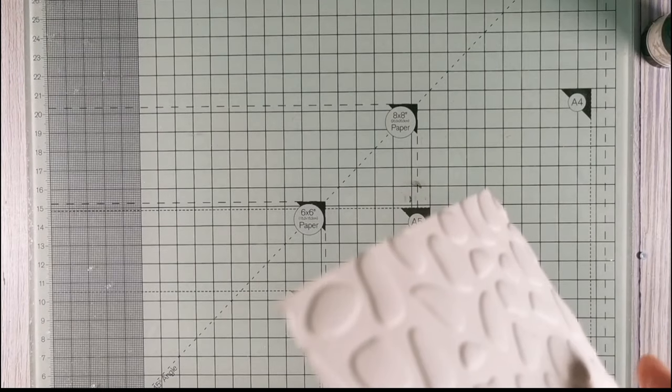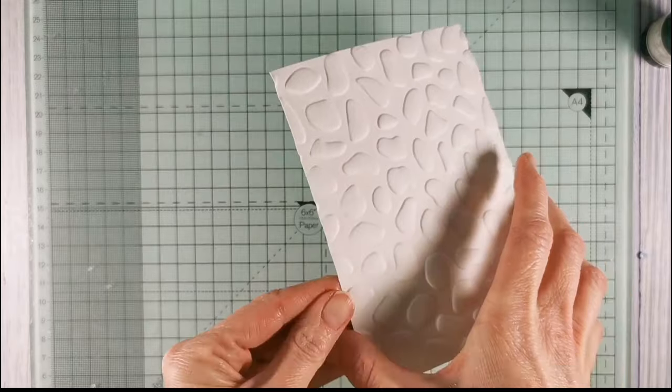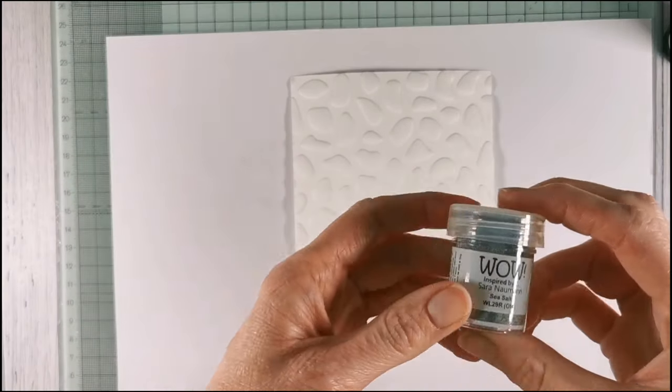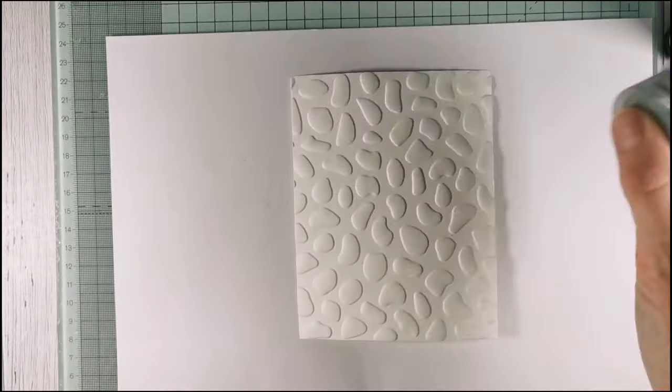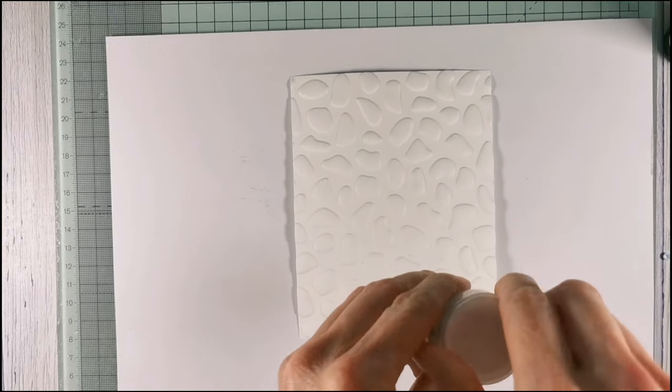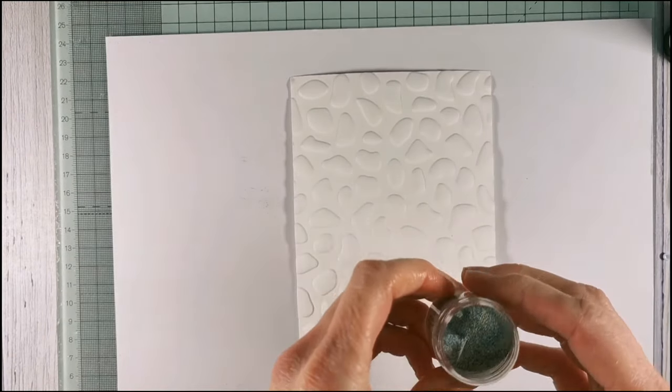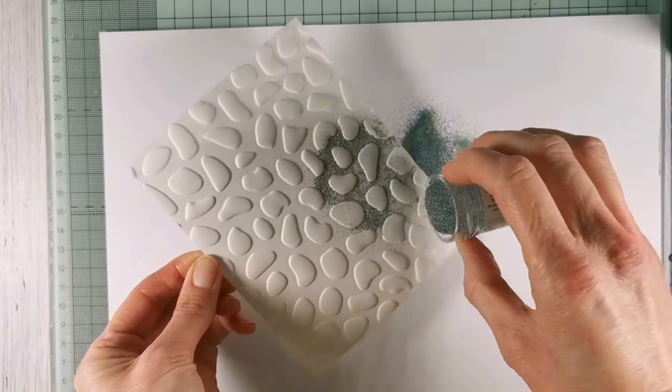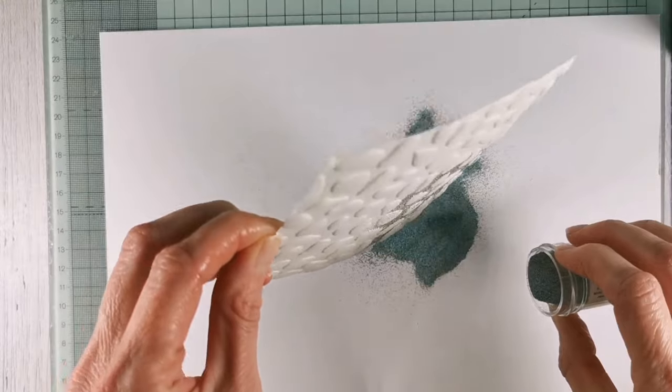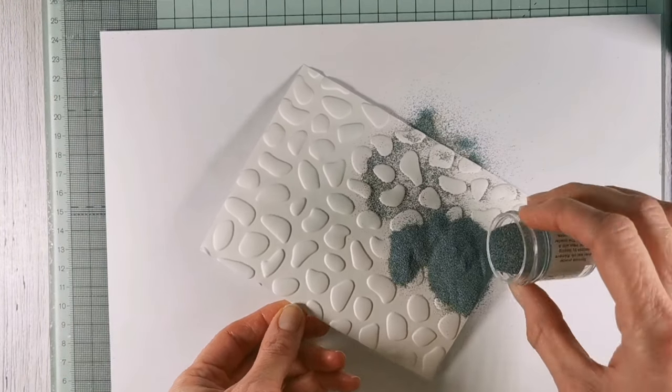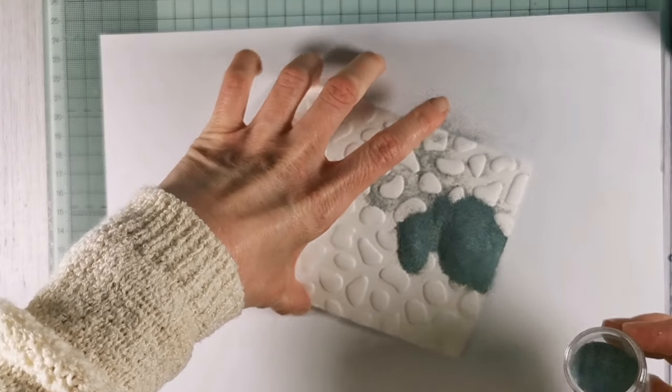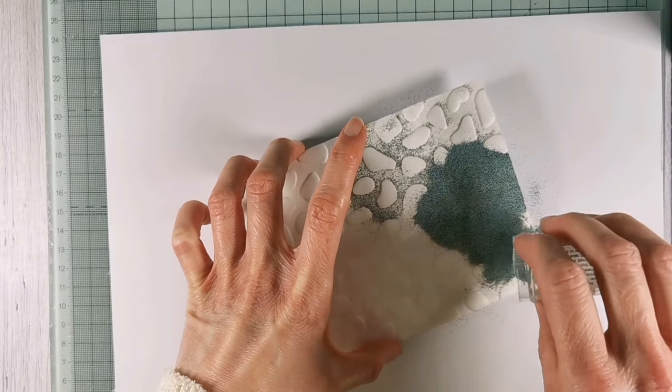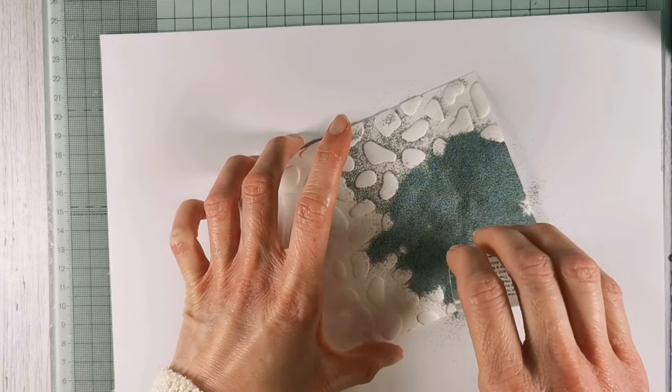So I have dusted a piece of cardstock with some anti-static powder and then popped that into my embossing folder, run it through my die cut exactly the same as last time. And now I'm going to be adding my embossing powder. You'll see here that instead of sticking to the stones, which are the protruding parts of the panel, they're actually sticking to the background, so that is where our embossing ink has been applied this time.